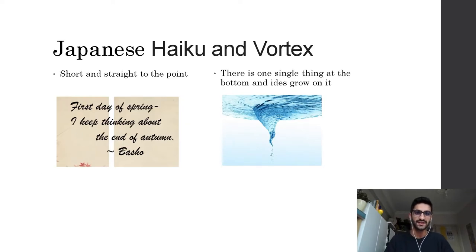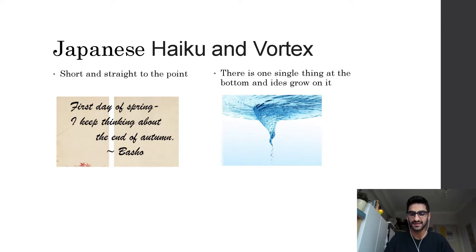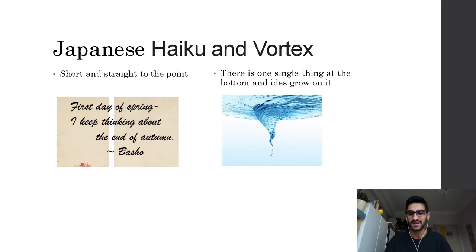Here is a haiku example: 'First day of spring — I keep thinking about the end of autumn.' Usually there are just three lines in haiku poetry, but they give a lot of information. 'First day of spring' represents new life, and 'end of autumn' represents the end of life. It is very direct. That is what influenced imagist poetry. As for the vortex concept: a poem starts with one small, single thing, and ideas grow from it — getting bigger and bigger.